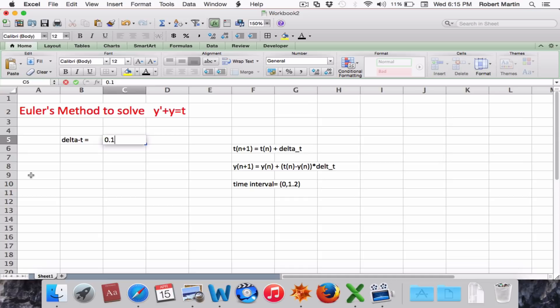Next, we're going to need three columns of data, which I'll label. The first column n, which will be our iteration number, t, time values, and y, the y values.